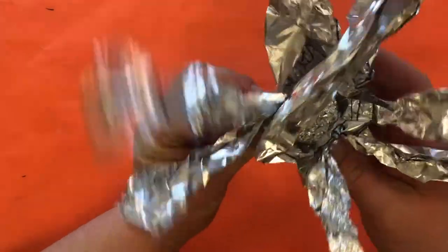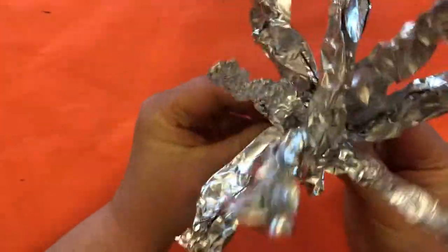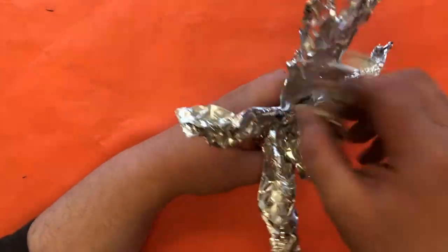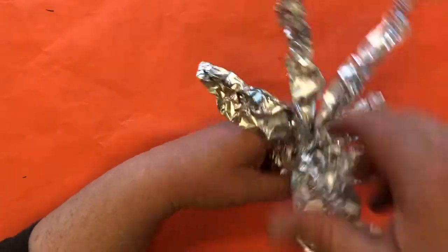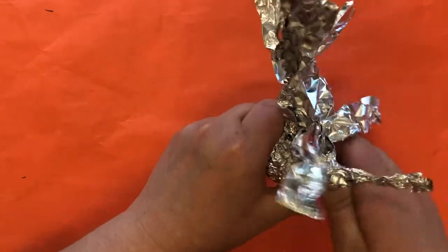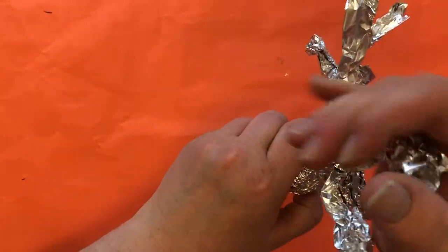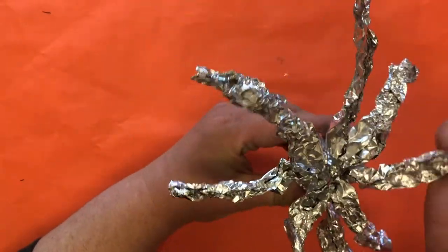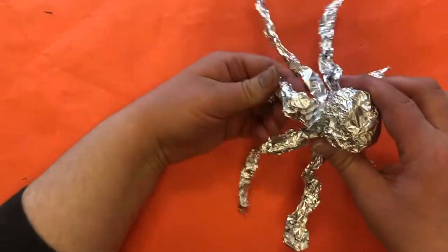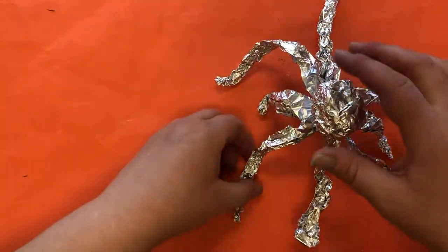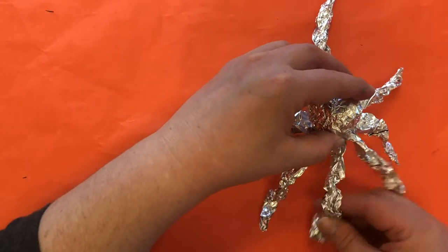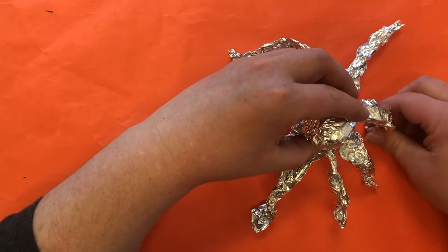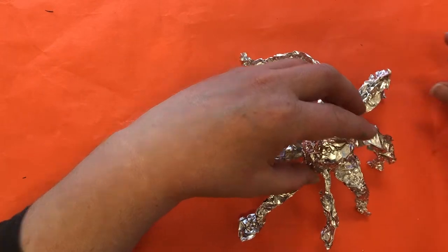All right. So now I'm going to start molding the whole thing around my ball, smushing it together. And then I can start to pull out those spider legs. You can smush them a little bit more, make them a little more stable.